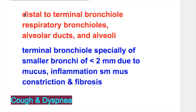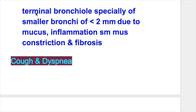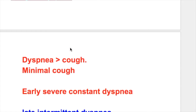Where does the airflow obstruction occur in emphysema and bronchitis? In emphysema, airflow obstruction occurs distal to the terminal bronchioles — in the respiratory bronchioles, alveolar ducts and alveoli. Whereas in chronic bronchitis, the obstruction occurs at the terminal bronchioles, especially of smaller bronchi of less than 2 mm, due to mucus, inflammation, smooth muscle constriction and fibrosis.